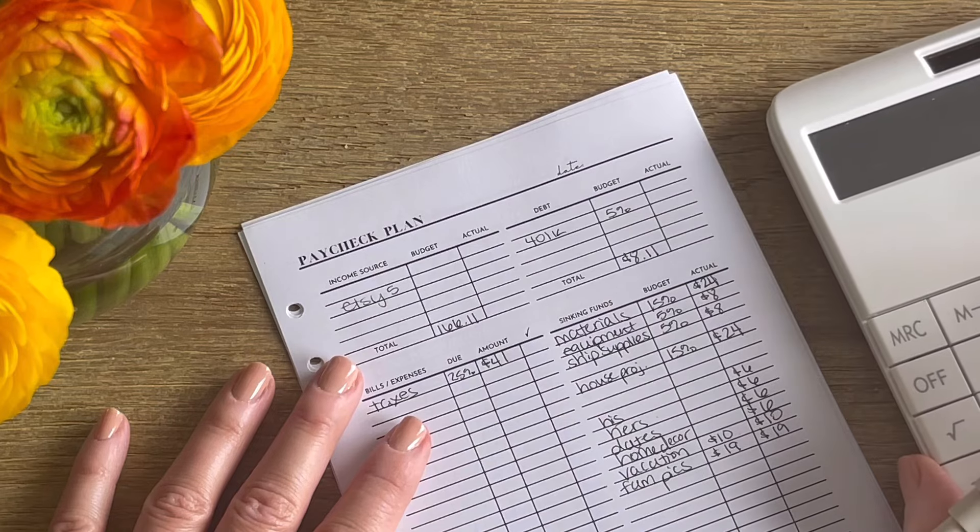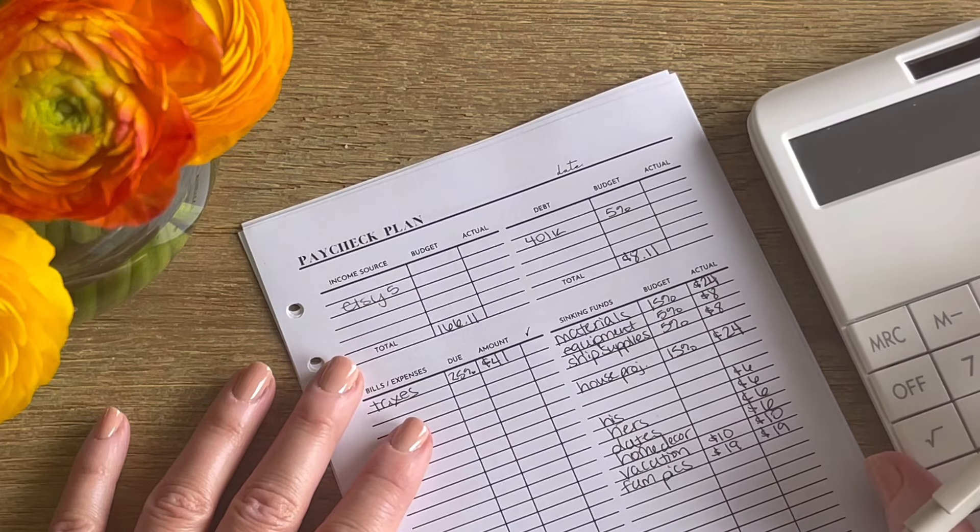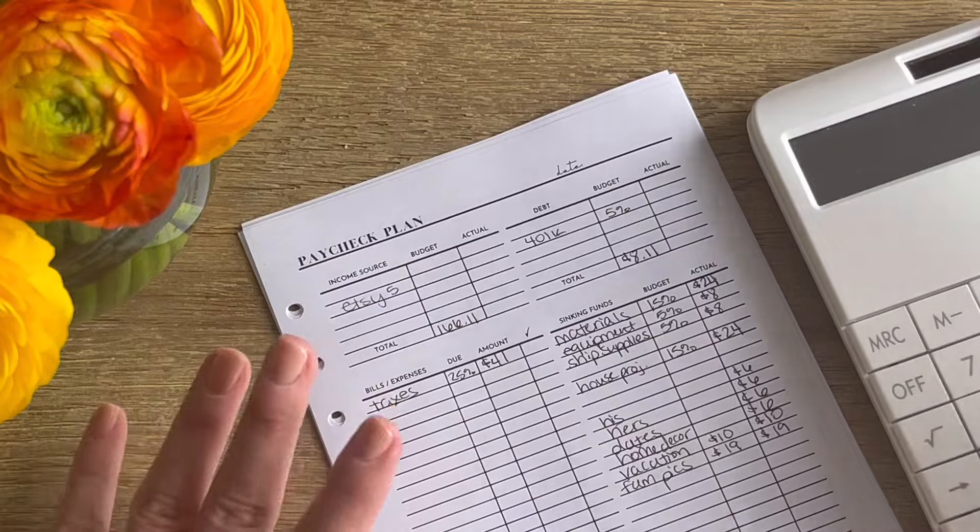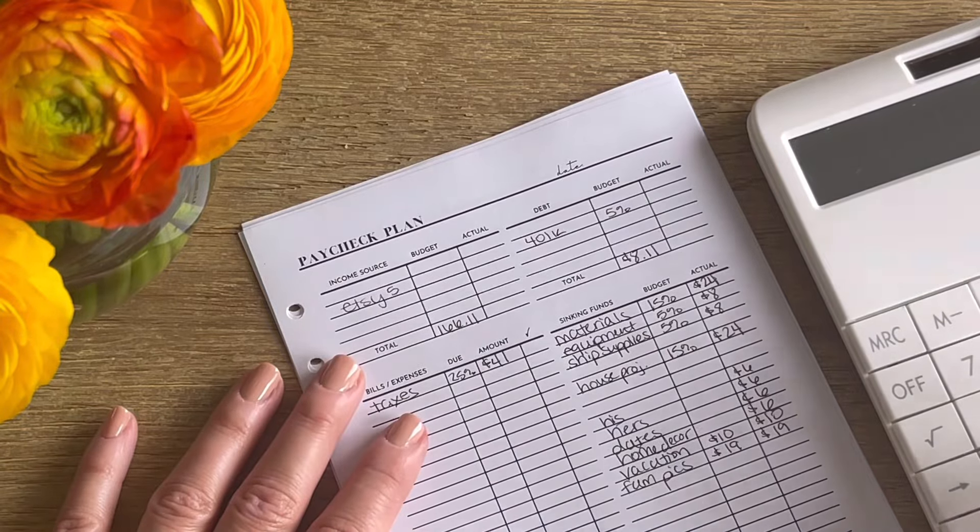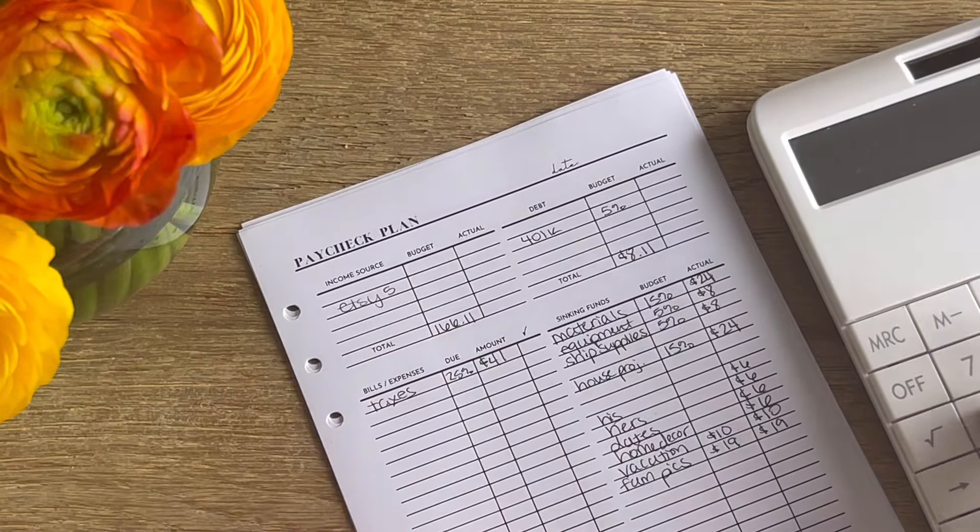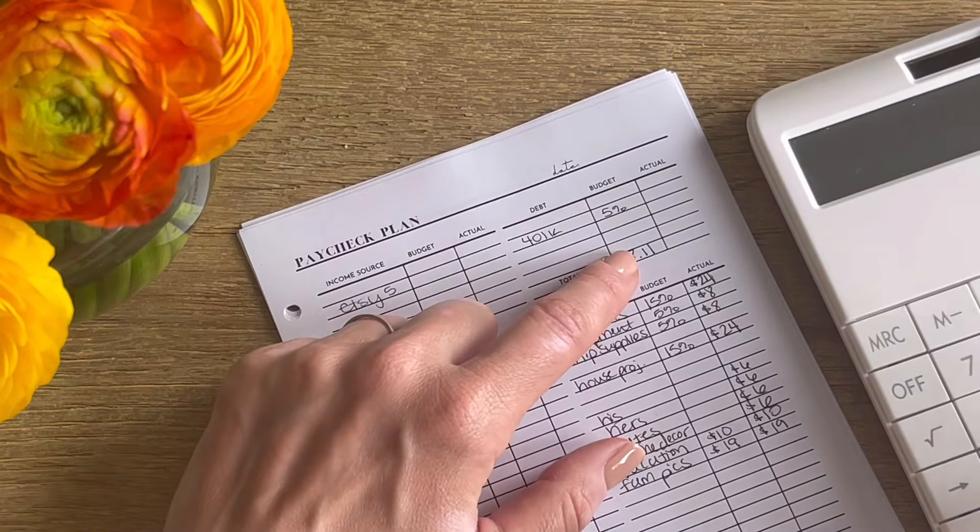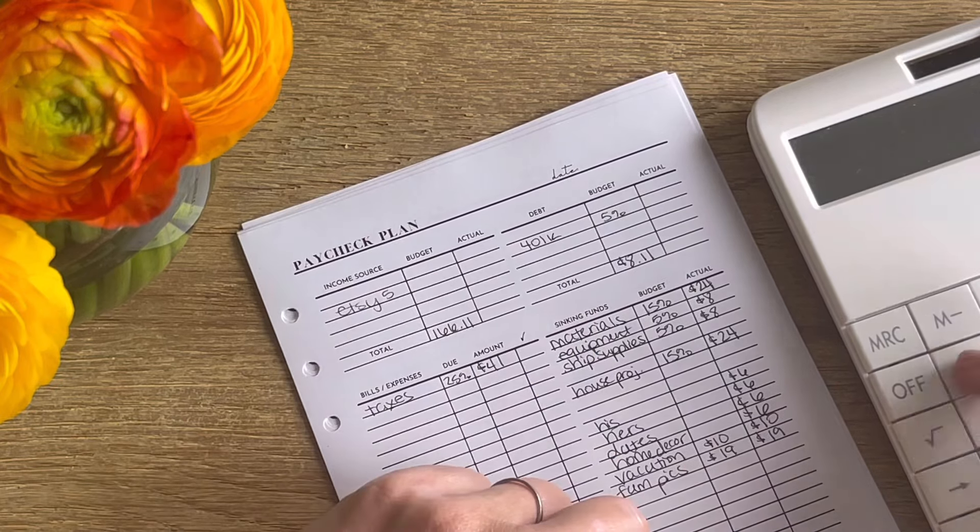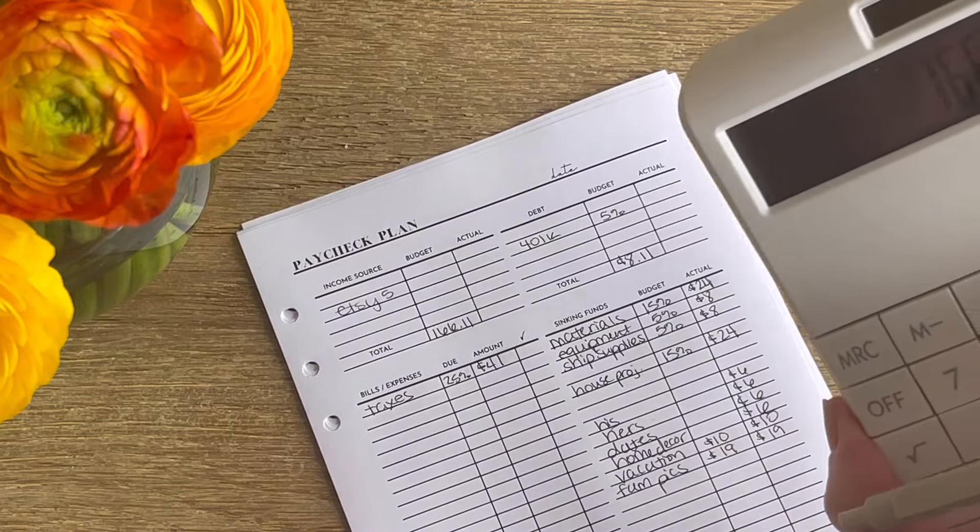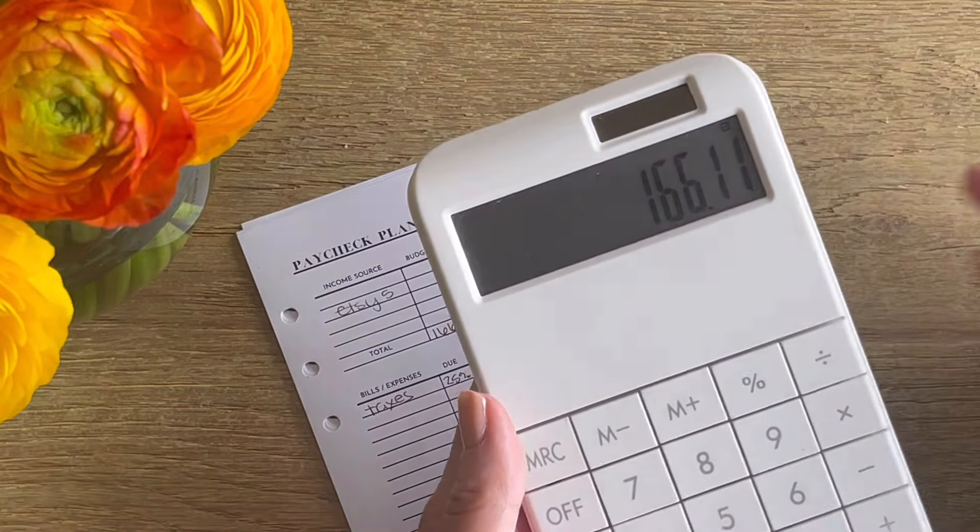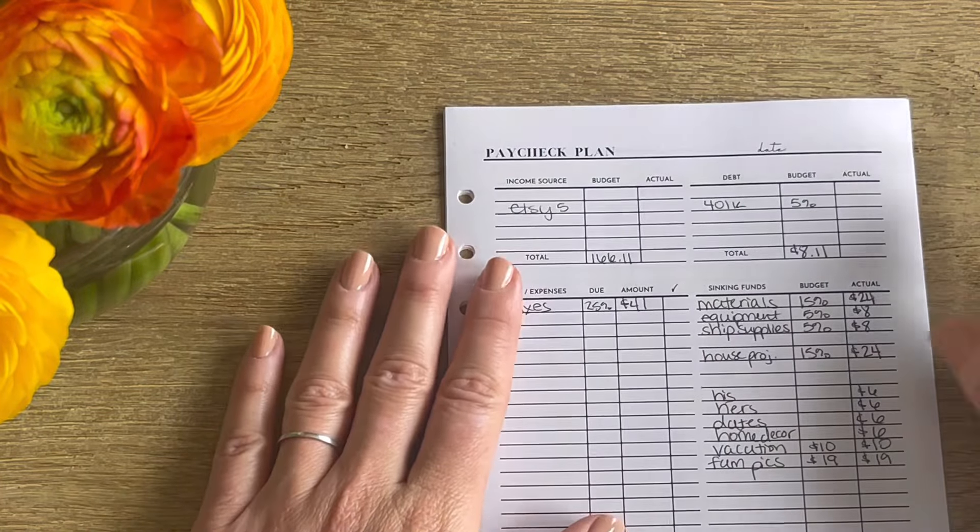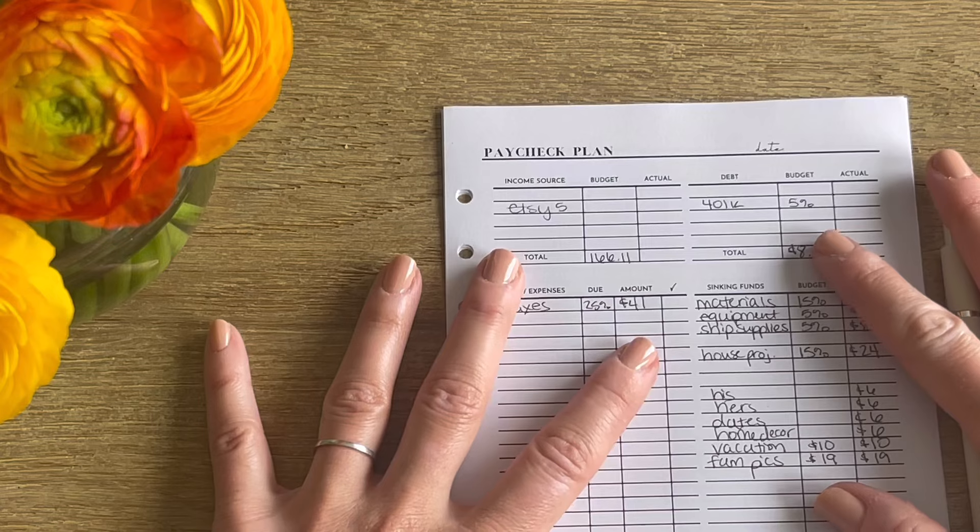So here we go. So we've got $41 from bills and expenses, $8.11 from debt and $117 from sinking funds. And that leads us to $166.11. So that's it. We did it. We zero-based budgeted a side income and we did five of them in the month of April. So that was really fun too. I'm going to go ahead and zoom you guys back out and then we will finish out this video.